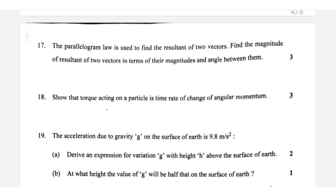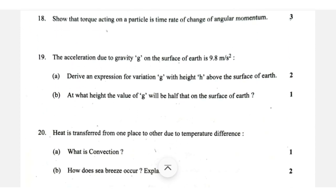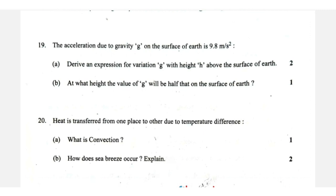Question number 18: system of particles — torque equals dL/dt, the derivation. Question 19: the variation of gravity with height. g_h equals g times (R over R plus h) squared. At height h equals 0.414R, since root 2 is 1.414, so h equals 0.414 times the radius of the Earth.